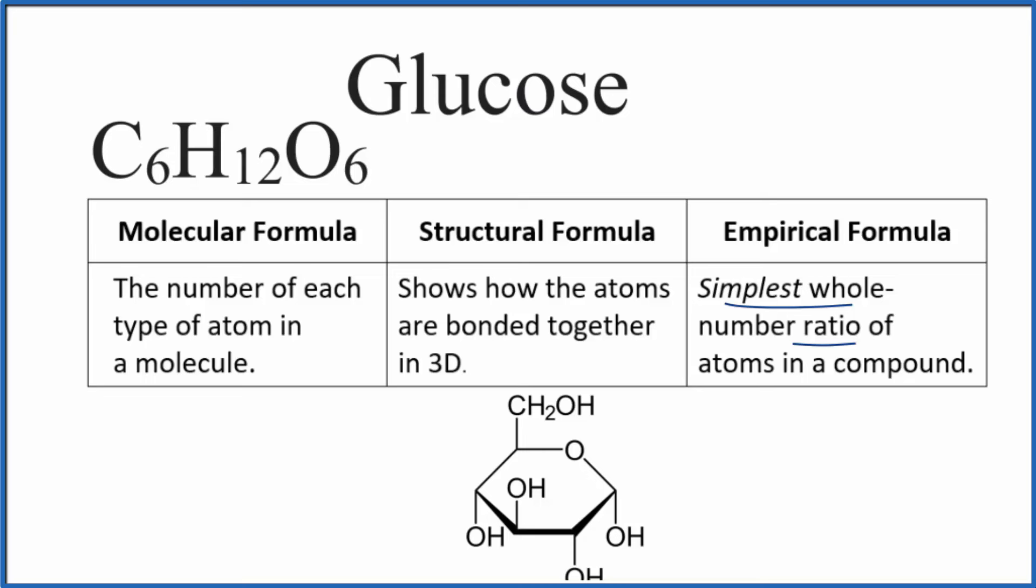When we do that, we end up with C1H2O1, and we don't write the ones. That's because six divided by six is one, 12 divided by six is two, and six divided by six is one. So the empirical formula here is CH2O.